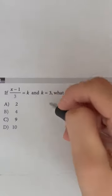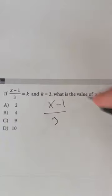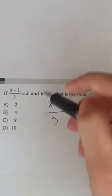All we have to do is write the equation, which is x minus 1 divided by 3 equals 3, since 3 equals k.